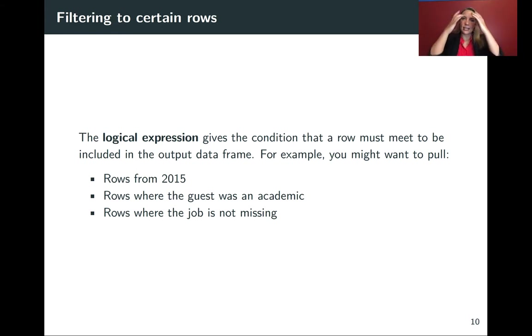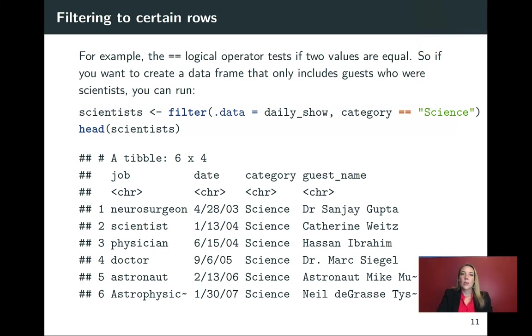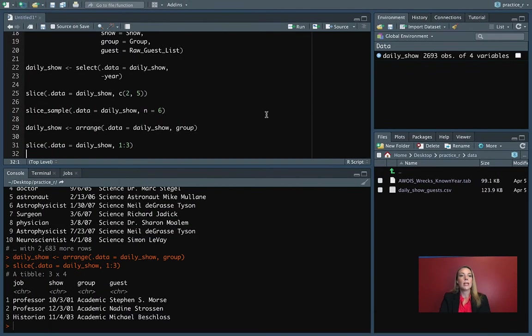The syntax we'll use for this is we'll first put in the data frame just like we've been doing for the other functions. But then we'll put in what's called a logical expression. We'll be doing a lot more over the class with these logical expressions, but this is your first introduction to them. So this logical expression lets you give the condition that the row needs to meet to be included in the subset that you're pulling out with filter. For example, you might want to take this large data frame you have and you might want to pull out only the rows from 2015, or only the rows where a guest was in that category of academic, or maybe even only the ones where a certain value was missing. Filter with logical expressions will let you do all of that.